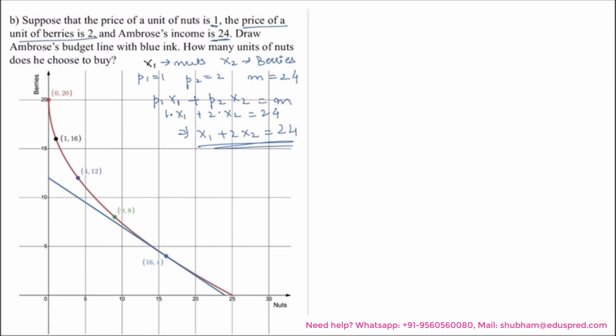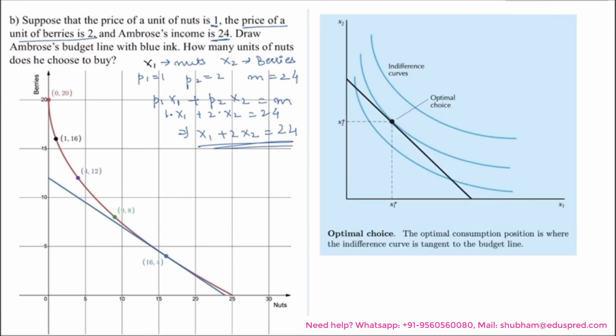Now the question also asks us how many units of nuts does he choose to buy? First understand on what basis would Ambrose choose the units of nuts to buy.